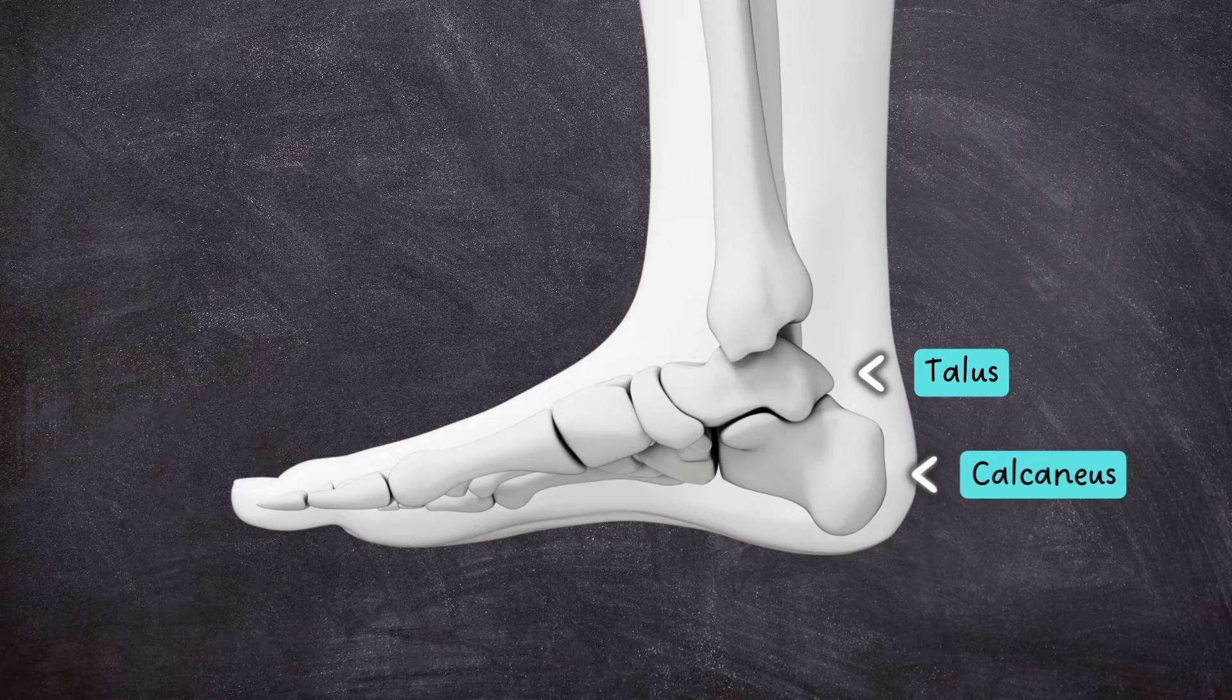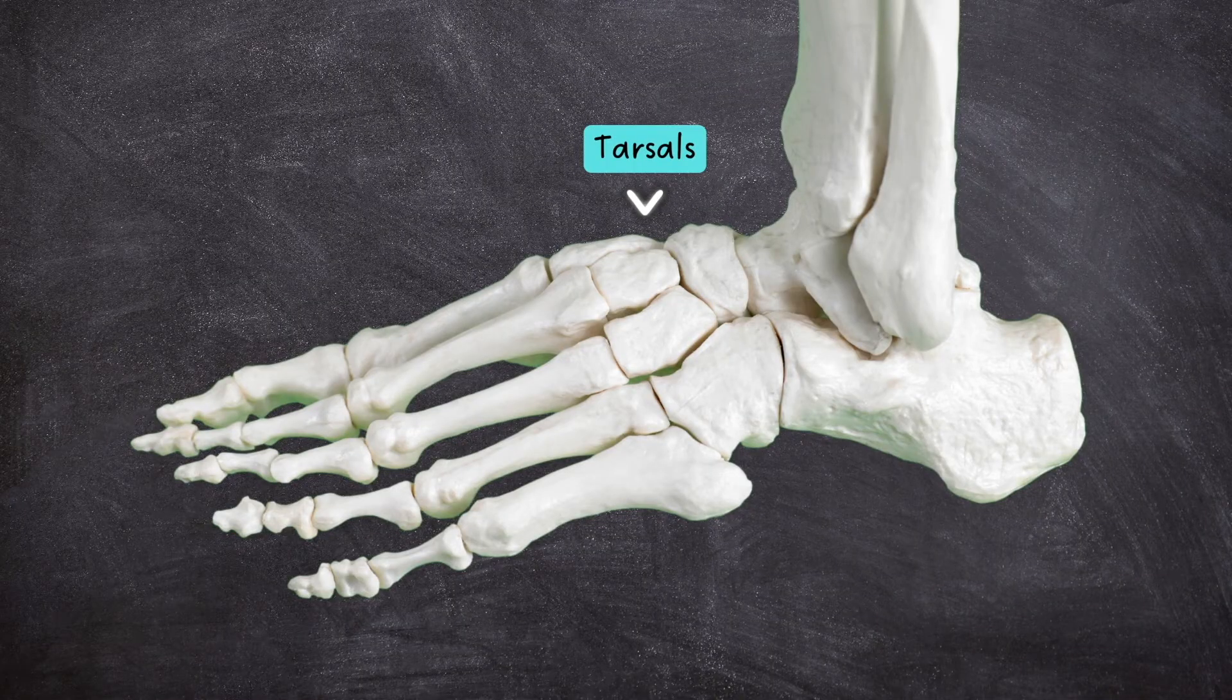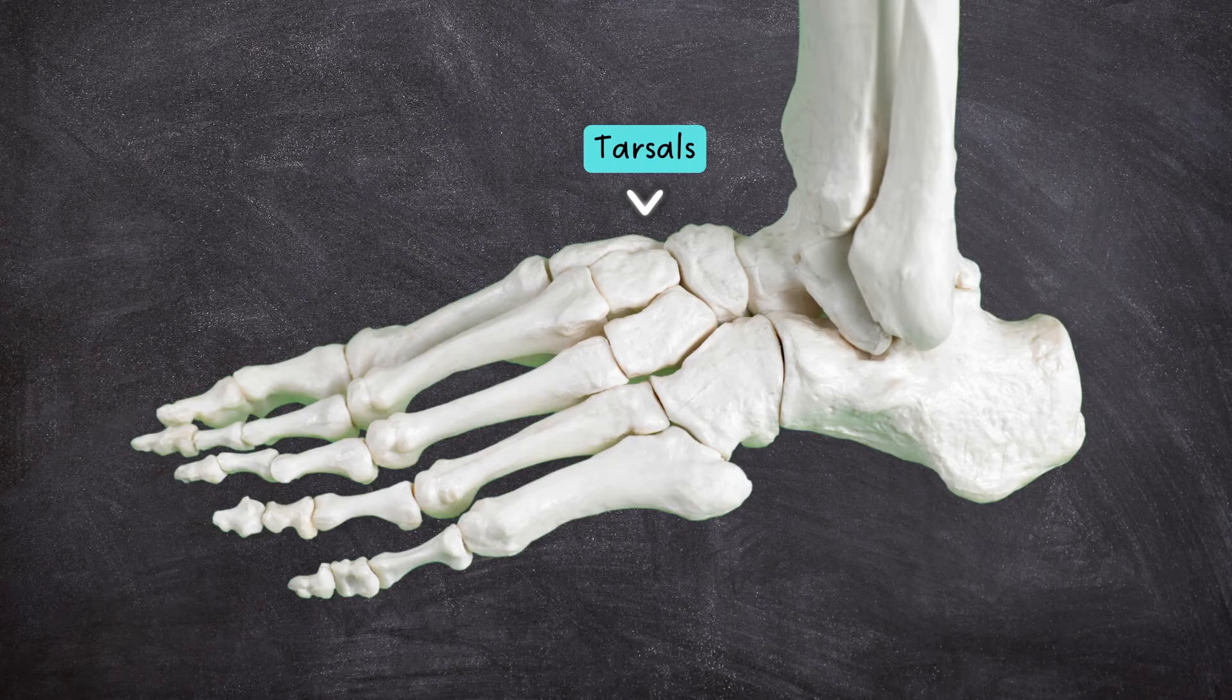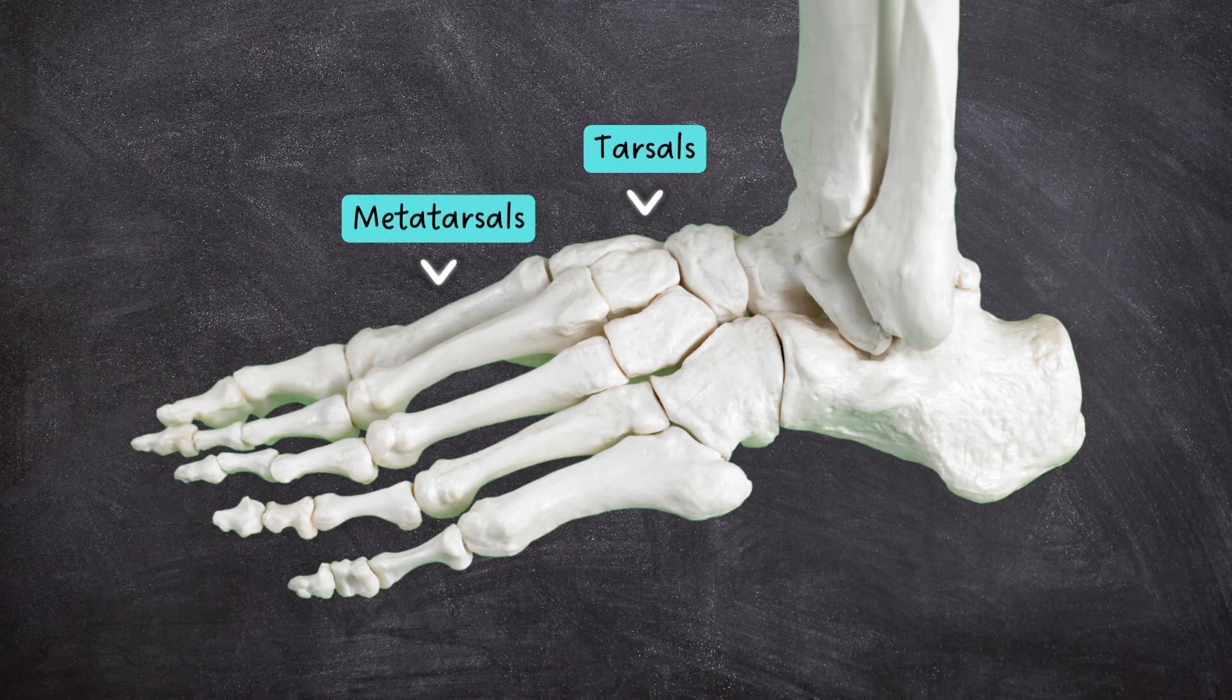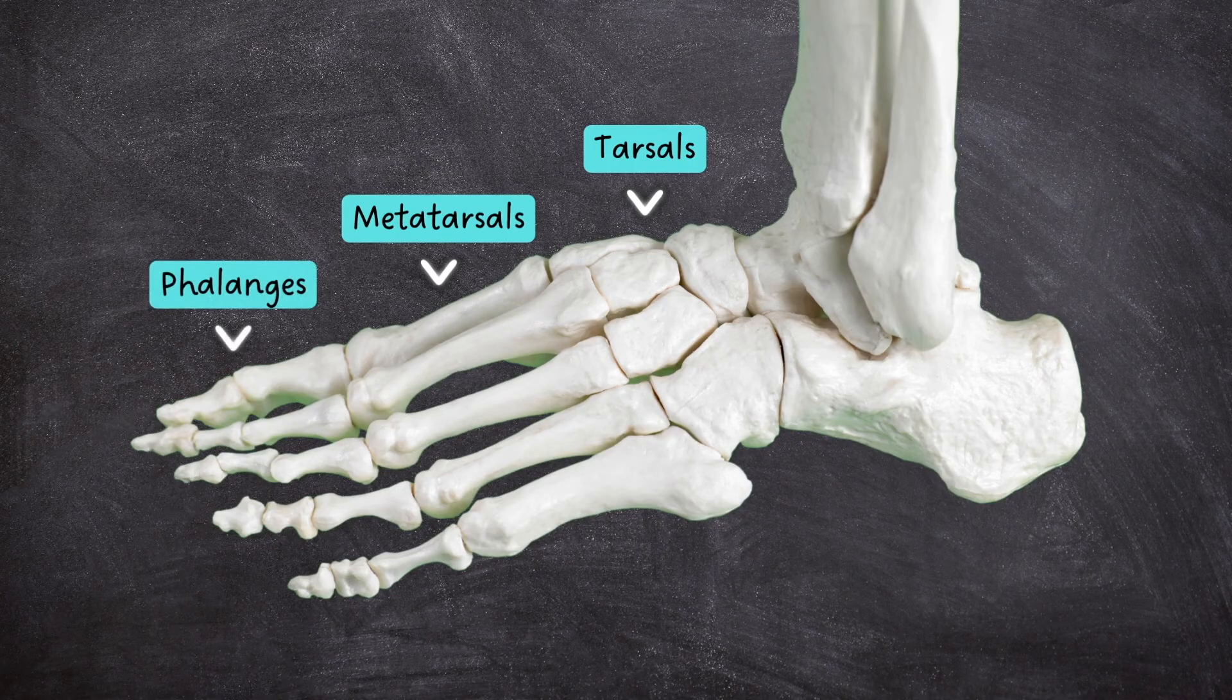Moving down the foot, there are many similarities with the hand. The top part consists of the short tarsal bones, which provide a small range of movement and support the weight of the body. The tarsals connect to the longer metatarsals in the middle, which in turn connect to the 14 phalanges, or toe bones.